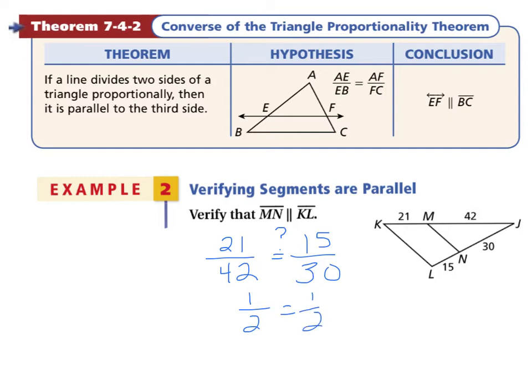By the triangle proportionality theorem, the converse of it, we can say that segments MN and KL are parallel. Once again, you could have said 42 divided by 21 and 30 divided by 15, and you could have showed me that the ratios of the sides were 2. That would also work.